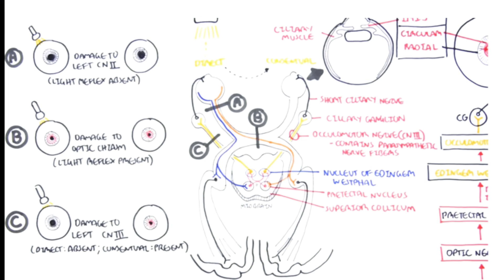Now let us discuss what happens when there are lesions in the light reflex pathway. We will discuss three scenarios: first, damage at the level of the optic nerve; second, damage at the level of the optic chiasma; and third, damage at the level of the oculomotor nerve.